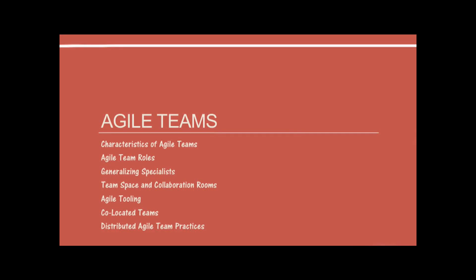This module is on Agile Teams. We will talk about the characteristics of Agile Teams, Agile Team roles, generalizing specialists, the team space and collaboration rooms, Agile tooling, co-located teams, and distributed Agile Teams best practices.